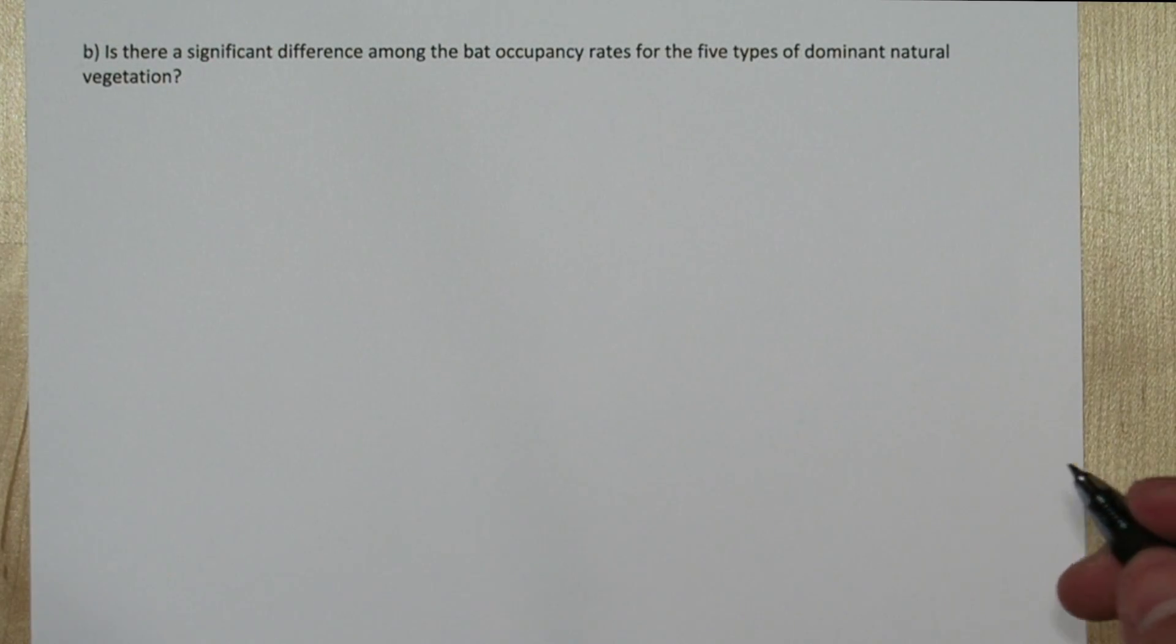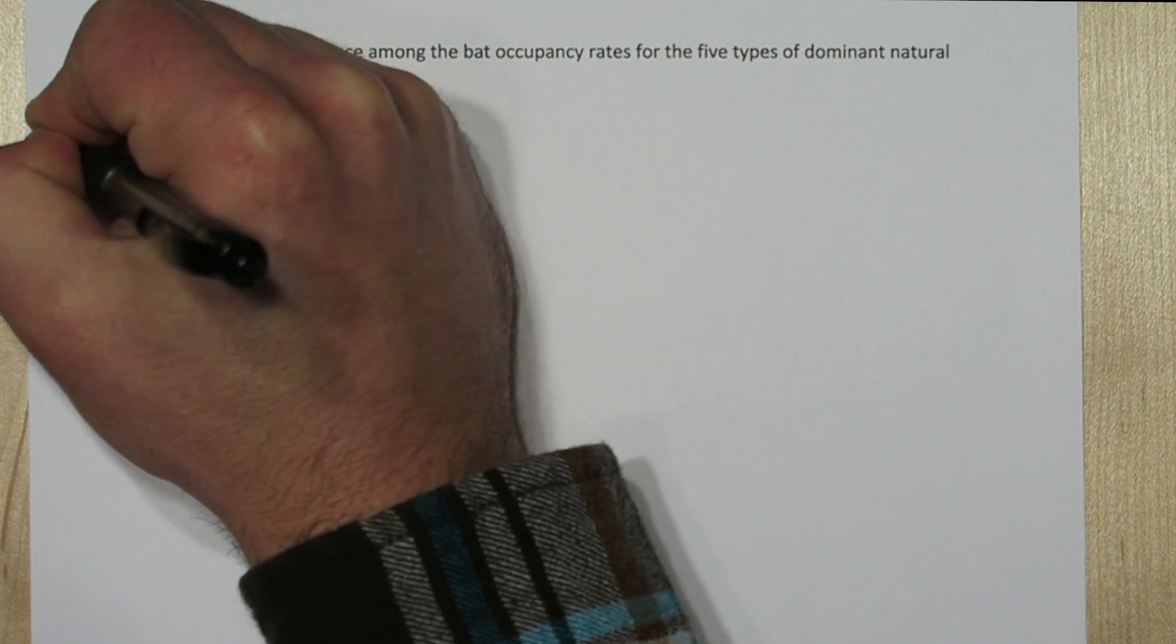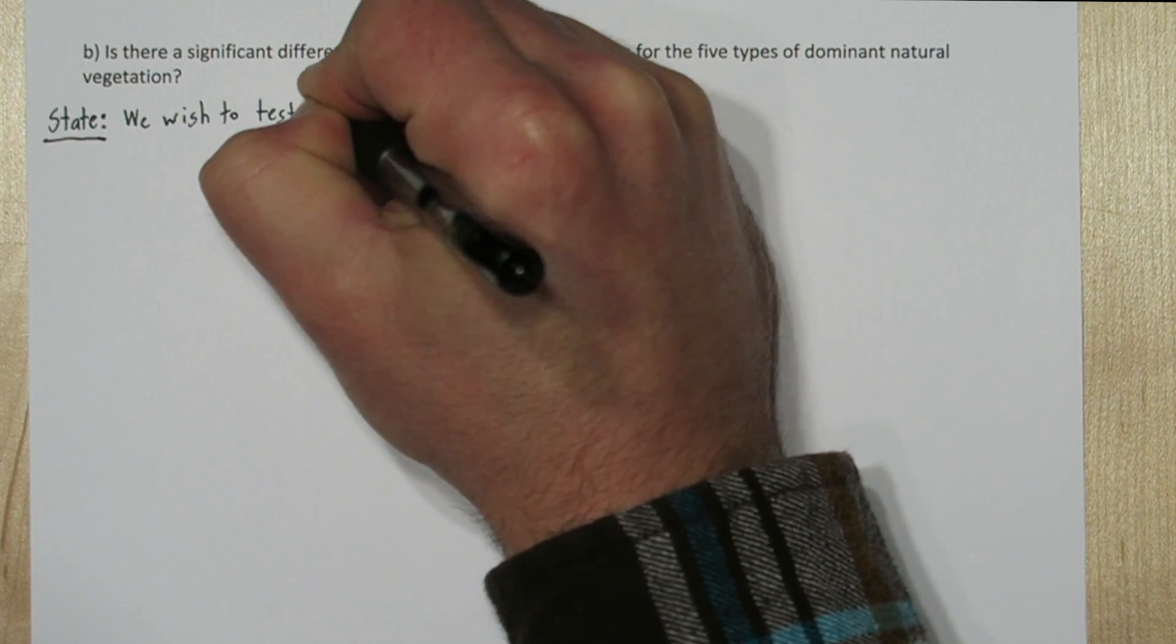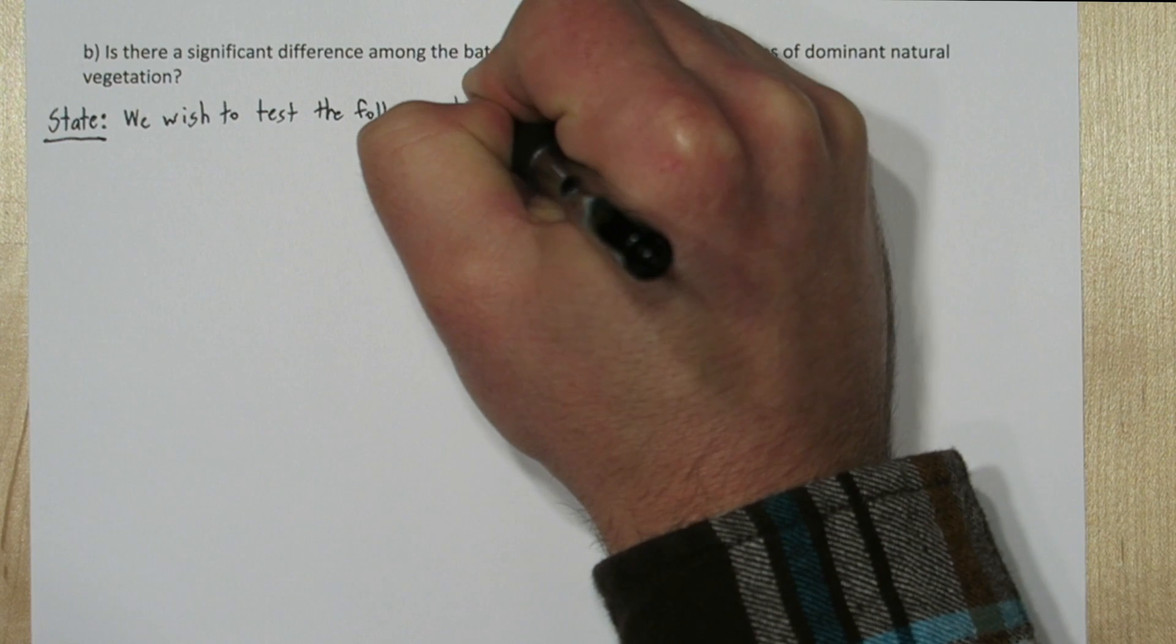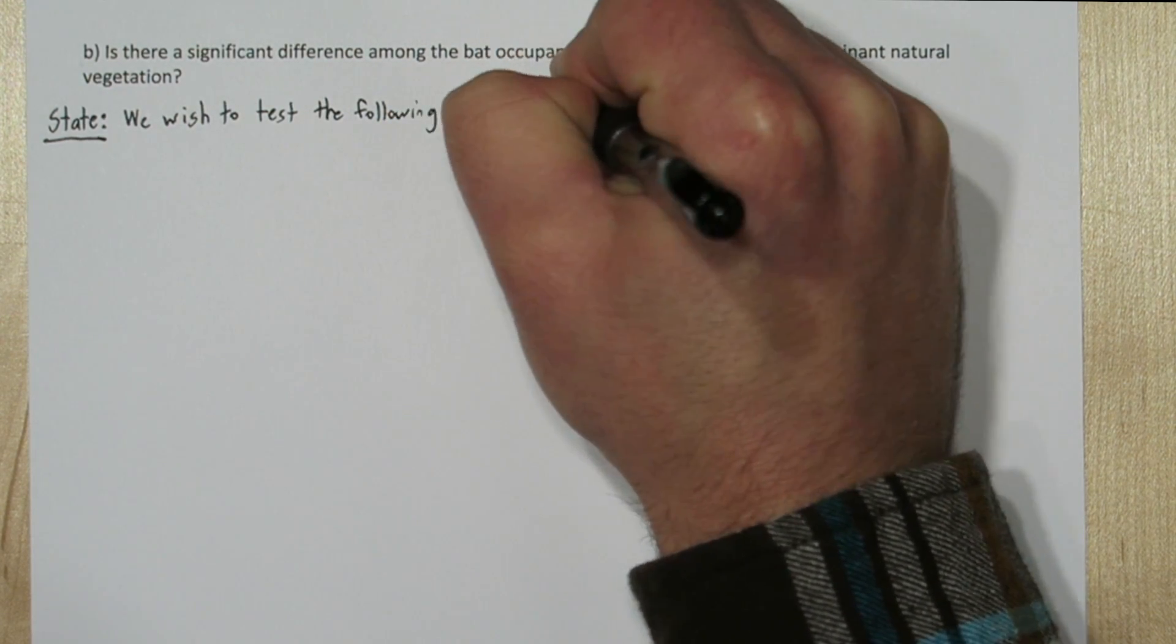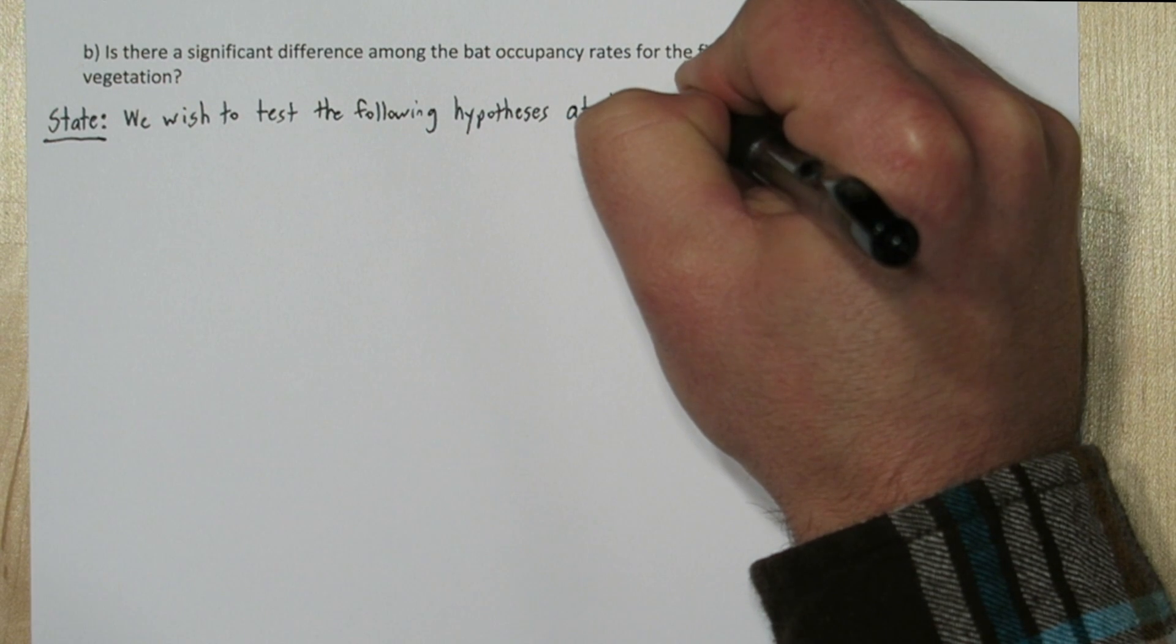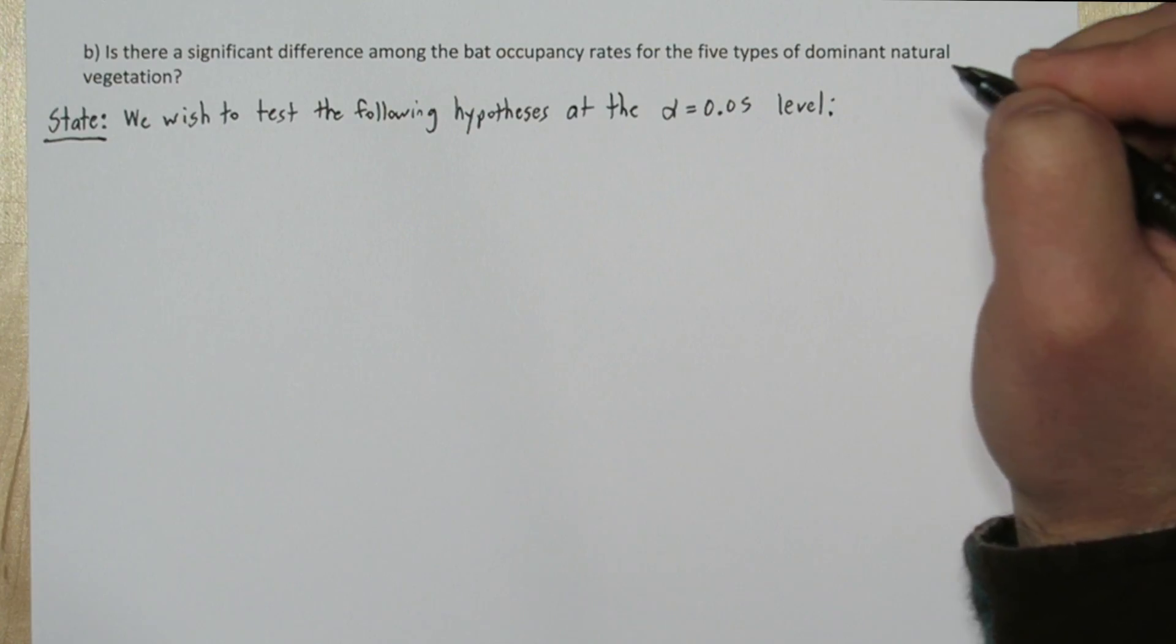But are these differences in occupancy rates significant enough for us to say there's a true difference? That's what part B is all about. We're going to use the four-step solving process. For the state step, we'll say we wish to test the following hypotheses at the alpha equals 0.05 level. Now I chose 0.05 because a significance level wasn't given in the problem, and that's the value we should use by default.